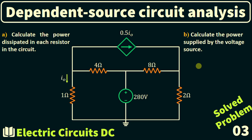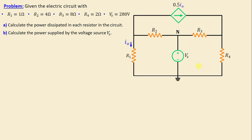Greetings, welcome to this new video about dependent source circuits analysis — problem number three. Let's consider this network consisting of four resistors labeled R1 through R4, along with one independent voltage source VS.